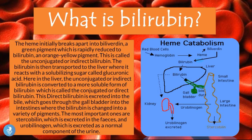The heme initially breaks apart into biliverdin, a green pigment, which is rapidly reduced to bilirubin, an orange-yellow pigment. Following the diagram, from the heme we went to biliverdin and now we are at bilirubin, which is an orange-yellow pigment. This bilirubin is the unconjugated or indirect bilirubin.